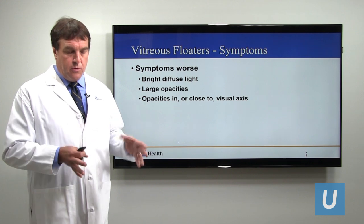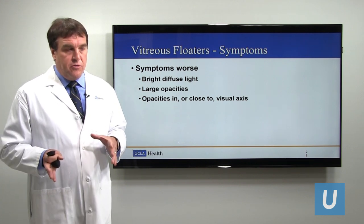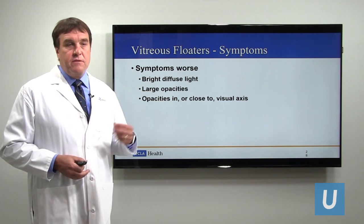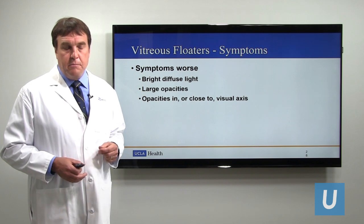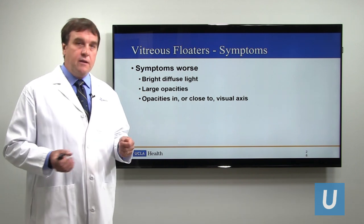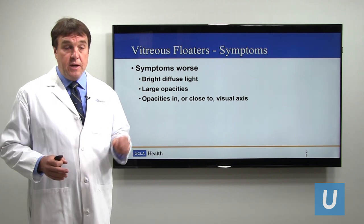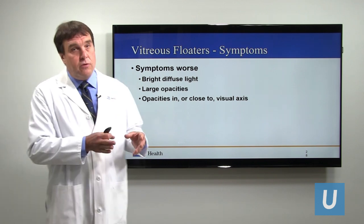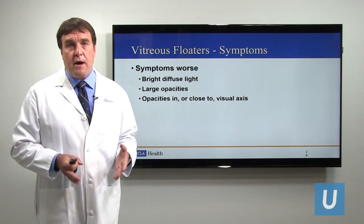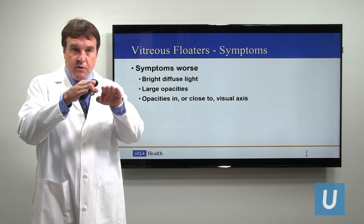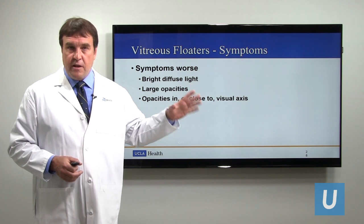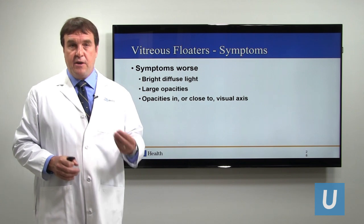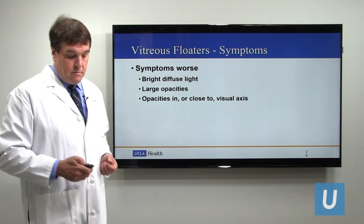So bright light brings out the floaters. Larger floaters are more bothersome because they can block more of the vision — patients with a big Weiss ring may have their reading vision blocked and have to shake their head after every line to move the floater out of the way. And the closer the floaters are to the visual axis, the more bothersome they are. Peripheral floaters are less noticeable; central floaters near what you're directly looking at, like a word you're trying to read, are much more bothersome.